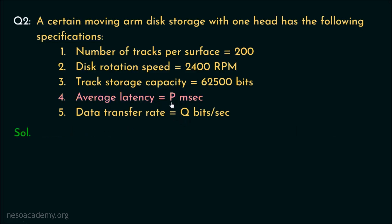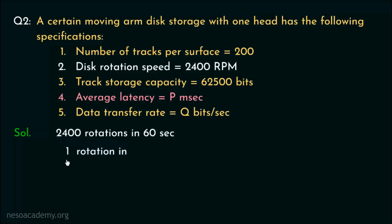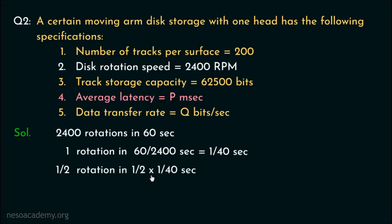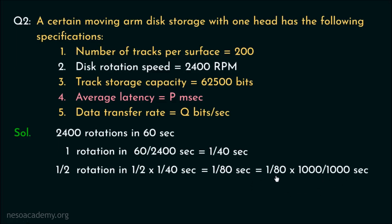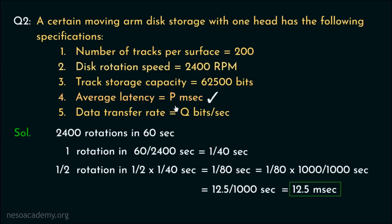We will start with p, the rotational delay. To find the rotational delay, we need the disk rotation speed. 2400 RPM means 2400 rotations in 60 seconds, so one rotation will take 60/2400 seconds, which equals 1/40 seconds. Therefore, for half a rotation, the disk will take 1/2 × 1/40 = 1/80 seconds. Since the unit of average latency is in milliseconds, multiplying by 1000 gives 1000/80 = 12.5. So half a rotation takes 12.5 milliseconds — this is the average latency, and we have found the value of p.